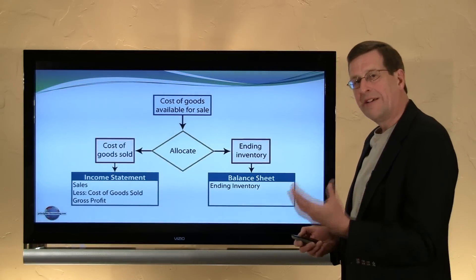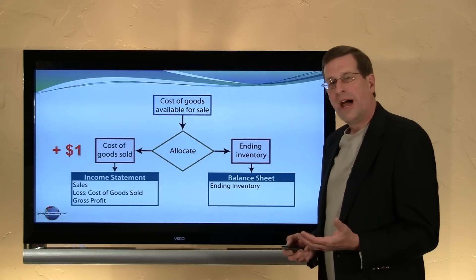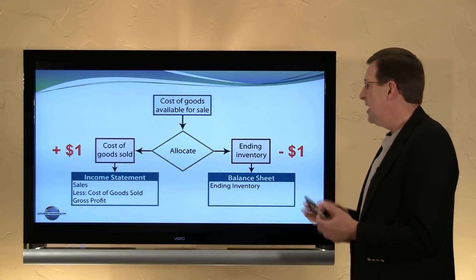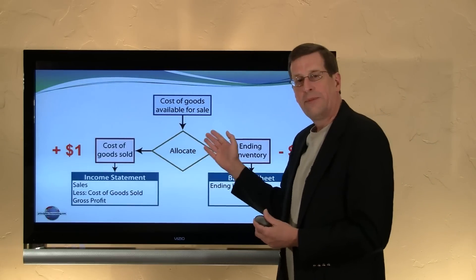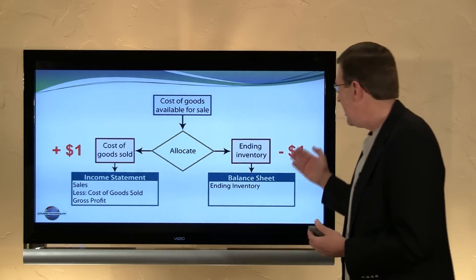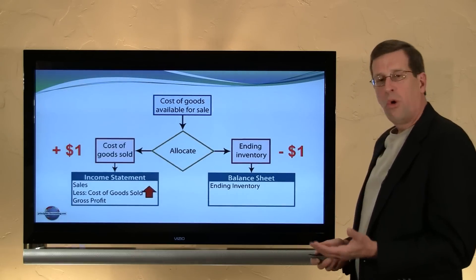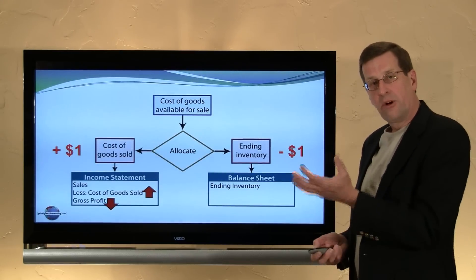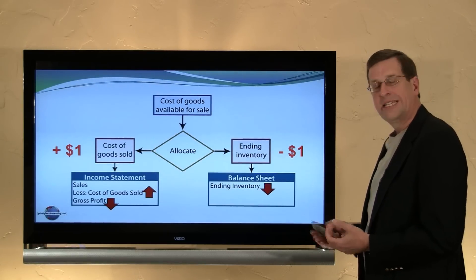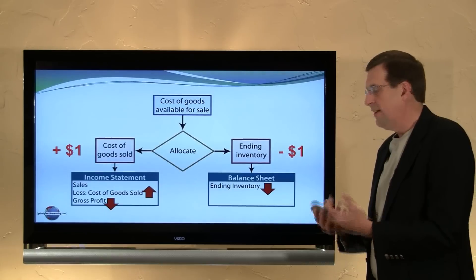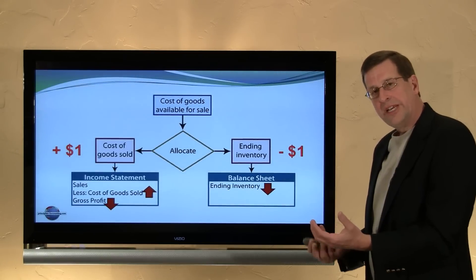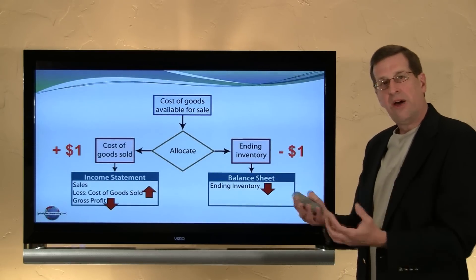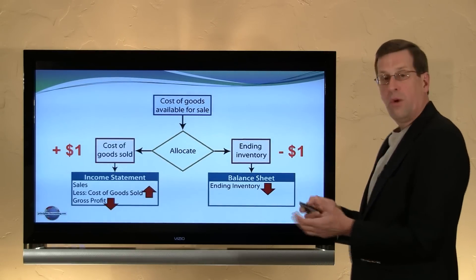Before we look at specific methods like FIFO and LIFO, consider this: if I allocate $1 more to cost of goods sold through my costing methods and $1 less to ending inventory, that's a necessary consequence. If I place $1 more in cost of goods sold, I necessarily place $1 less in ending inventory. That causes gross profit to be less — sales minus an increased cost of goods sold gives less gross profit — and $1 less in ending inventory reduces the asset on the balance sheet. So inventory is pushed down, profits are pushed down, retained earnings is pushed down, while balance sheet equality is maintained.